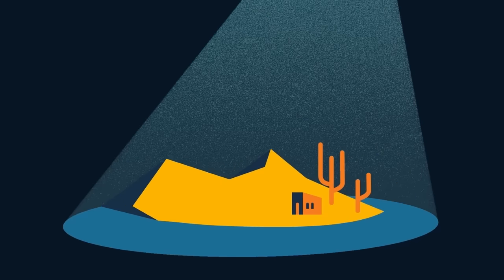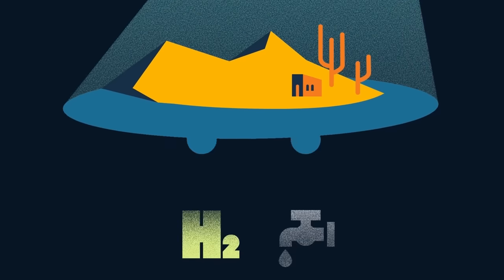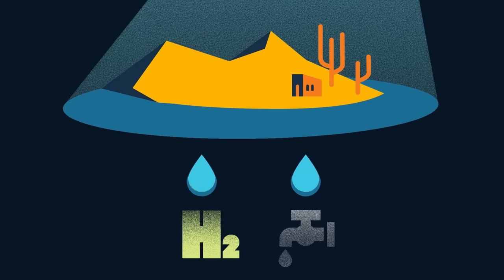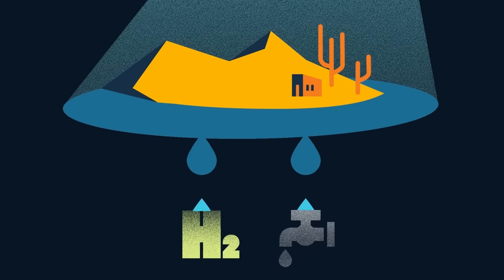In dry coastal areas, desalinated seawater should be used for hydrogen production, providing fresh water also for human daily needs.